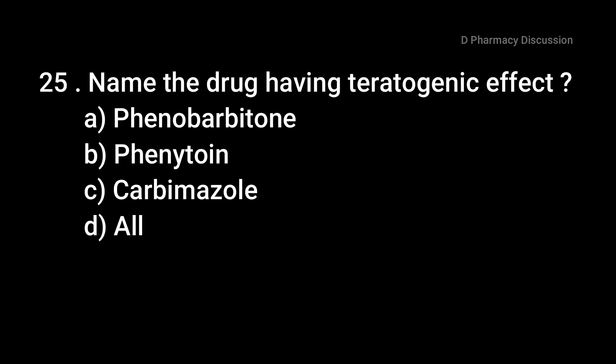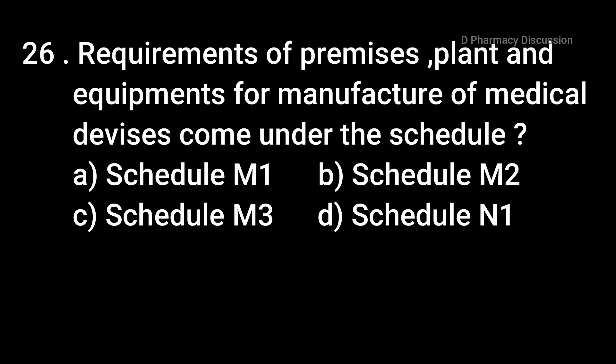Question number twenty-five: name the drug having teratogenic effect — options are A: phenobarbitone, B: phenytoin, C: gabapentin, and option D: all. The correct answer is option D, all. Question number twenty-six: the requirement of premises, plant, and equipment for the manufacture of medical devices comes under — option A: schedule M1, B: M2, C: M3, and option D: schedule N1. The correct answer is option B, that is schedule M2.